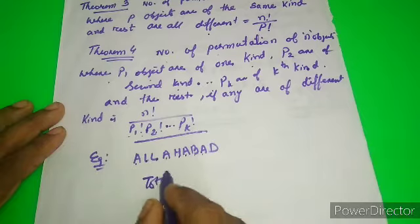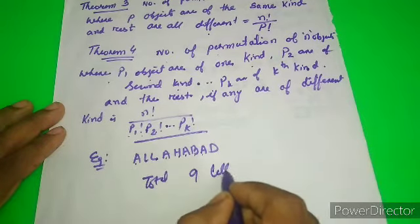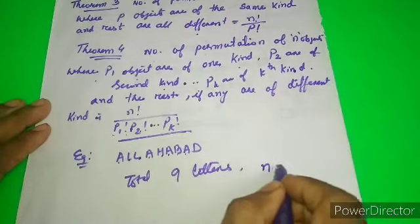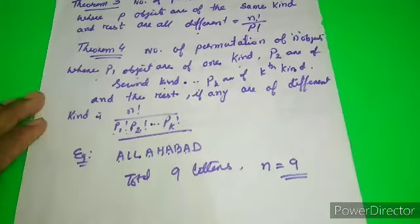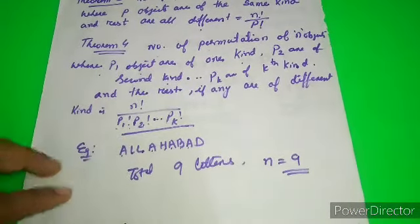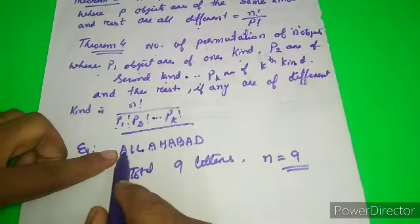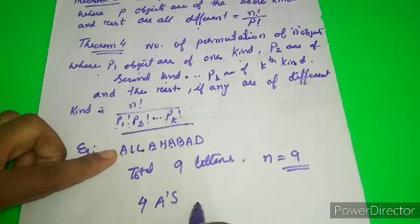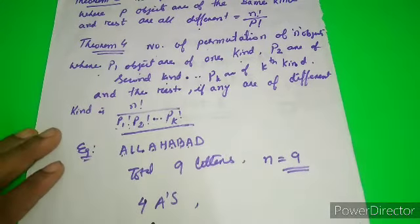There are 9 total letters, so n equals 9. Now if you see ALLAHABAD, the letter A appears how many times? 1, 2, 3, 4. Four A's are there, so p1 equals 4.